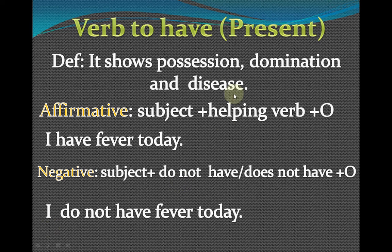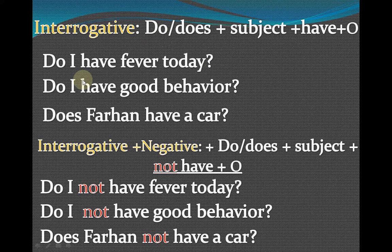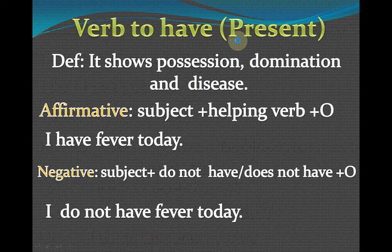For an interrogative sentence — which you already know — we place the helping verb before the subject. We replace the helping verb to the front. For example: 'Do I have fever today?' We are asking a question. Or: 'Do I have good behavior?' Here we are asking about behavior — good behavior is a property.